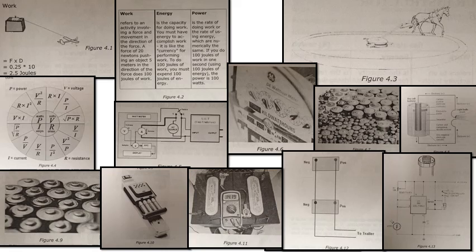See figure 4.2, which shows the relationship between work, energy, and power. Work refers to activity involving a force and movement in the direction of the force. A force of 20 Newtons pushing an object 5 meters in the direction of the force, thus 100 joules of work. Energy is the capacity for doing work; you must have energy to accomplish work. It is like the currency for performing work. To do 100 joules of work, you must expend 100 joules of energy. Power is the rate of doing work or the rate of using energy.